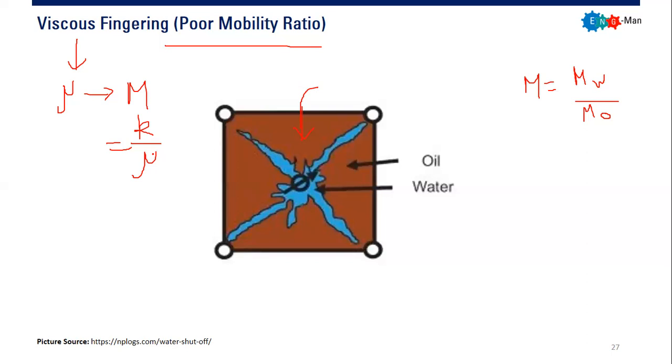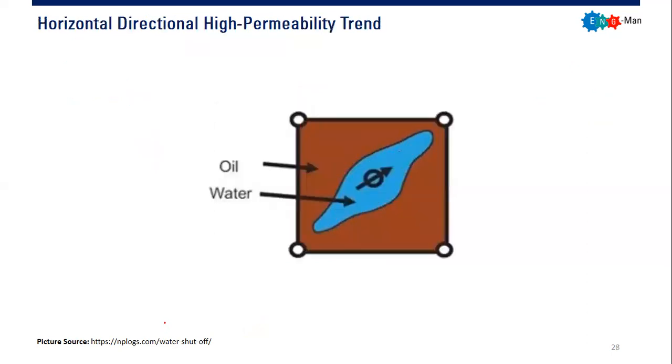By the way, if you want to check or read about this, you can go to this website. I took the picture from this website, thank you for this website. The picture is really good. The second problem we can face in the field is horizontal directional high permeability trend.